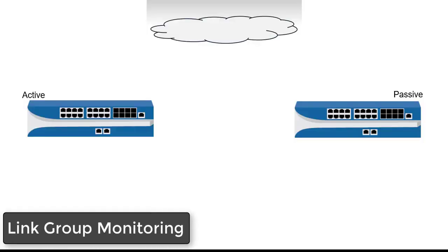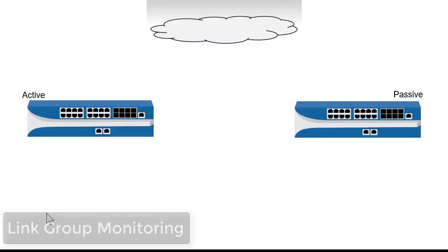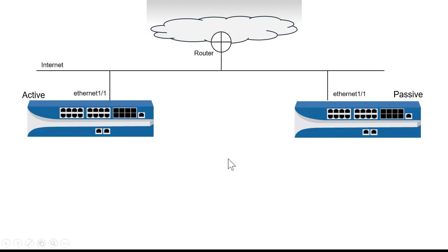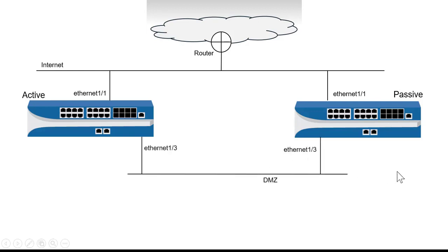Link Group Monitoring is an optional feature that I can configure for high availability. The easiest way to understand it is to draw it out. Let's say I have a pair of redundant firewalls. I've connected Ethernet 1 on both firewalls to my internet switches, and I have Ethernet 3 connected to my DMZ switches.